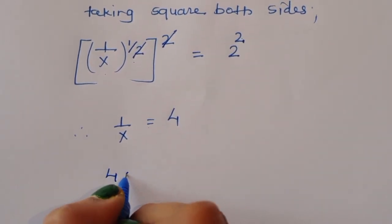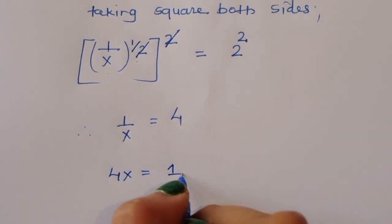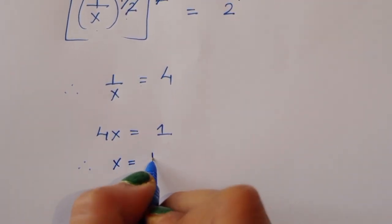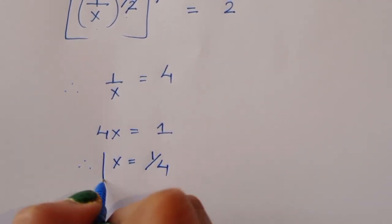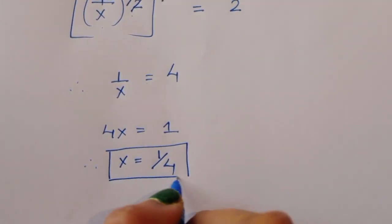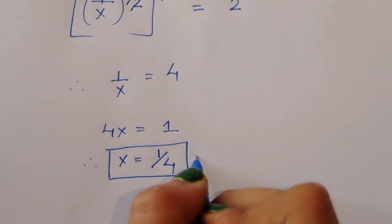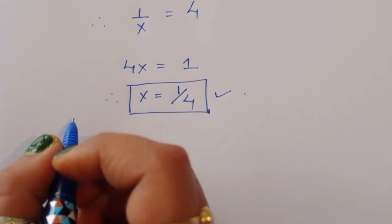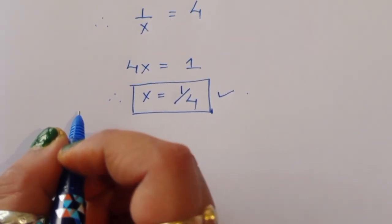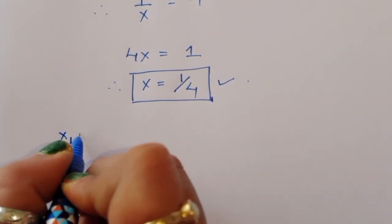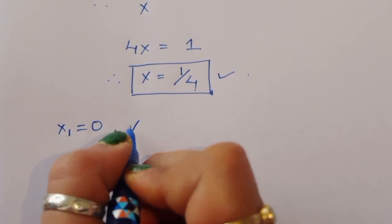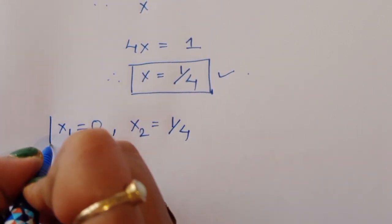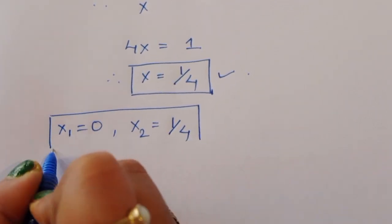So 1 upon x is equal to 4, therefore 4x is equal to 1, and x is equal to 1 by 4. This is the correct solution. Now we have two values of x from the first and second method: x1 is equal to 0, and x2 is equal to 1 by 4. Let's verify.